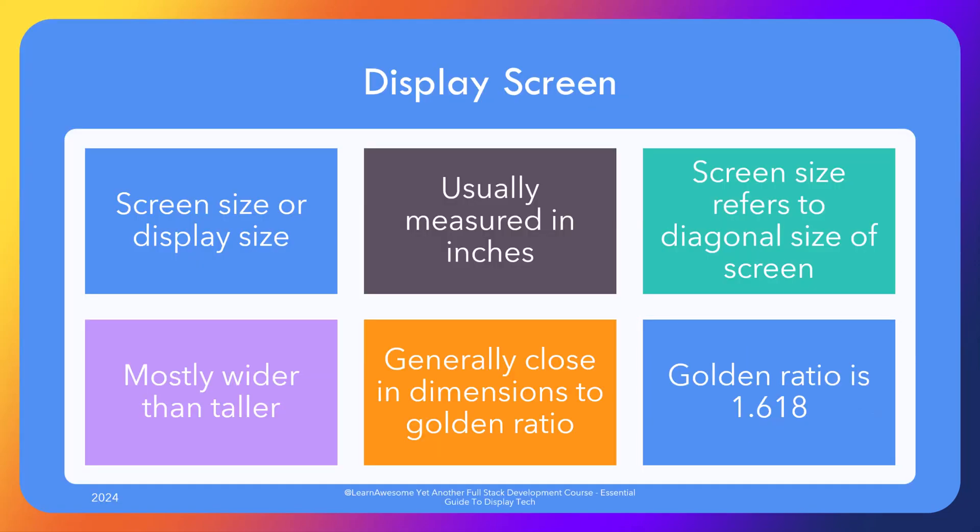There are a host of terms associated with screens and I'll discuss some relevant ones. First and foremost is the screen size or display size. That size can be physically measured by a ruler and is usually described in inches. The size always means the diagonal from corner to opposite corner, like top left to bottom right, also known as display size. Screens are generally rectangular shaped and the height and width is generally close to, but almost never equal to, the famous golden ratio.